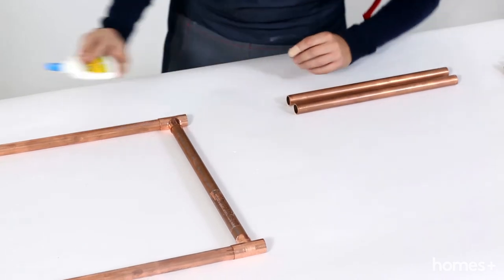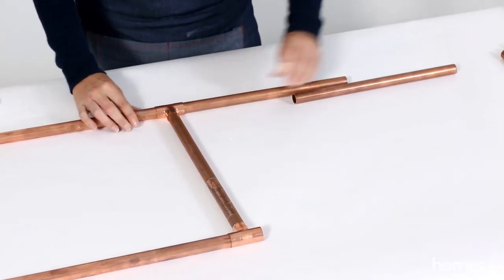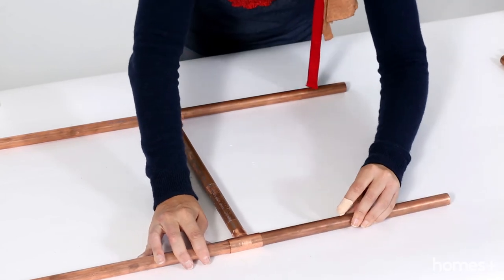Take two of your 30 centimeter lengths, apply a little glue and attach these to the ends of the copper tees.